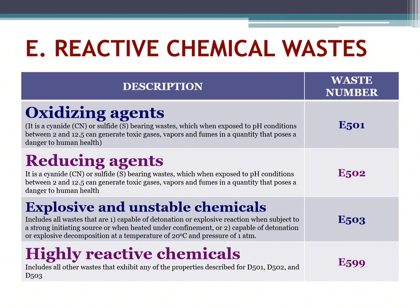Explosive and unstable chemicals: includes all waste that are capable of detonation or explosive reaction when subject to a strong initiating source or when heated under confinement, or capable of detonation or explosive decomposition at a temperature of 20 degrees Celsius and pressure of 1 atm. Waste number E503.